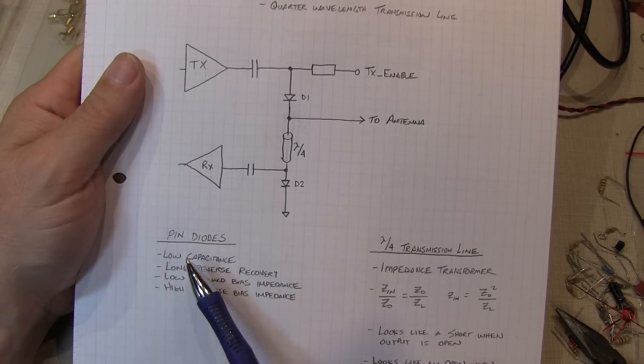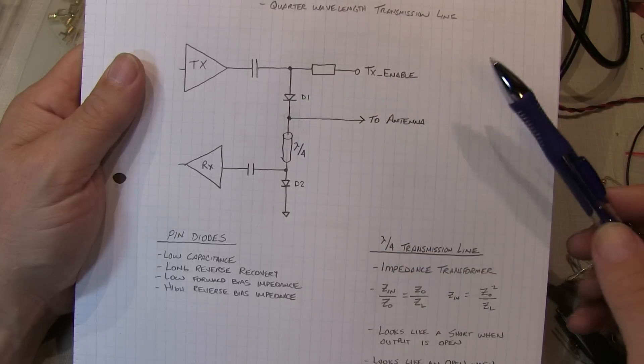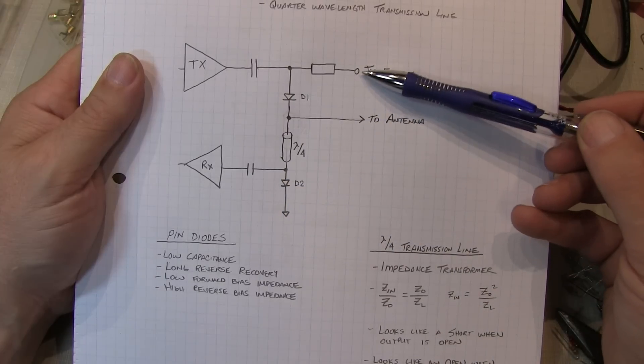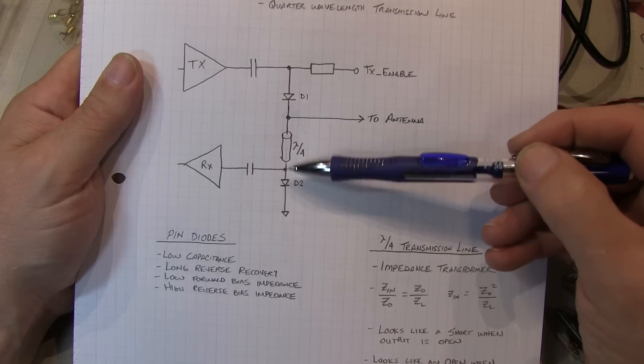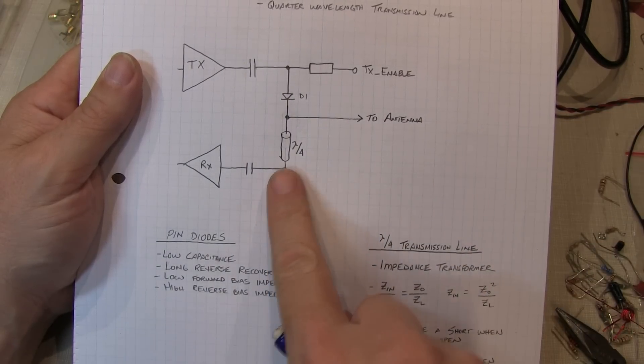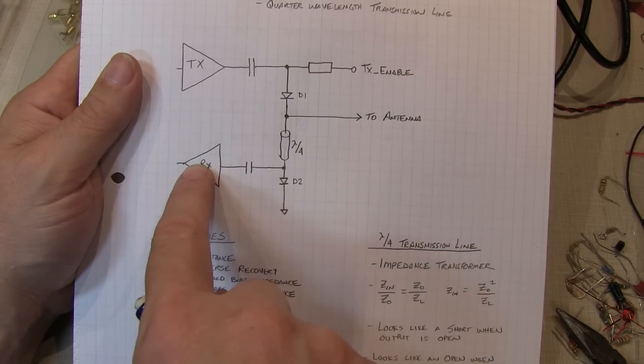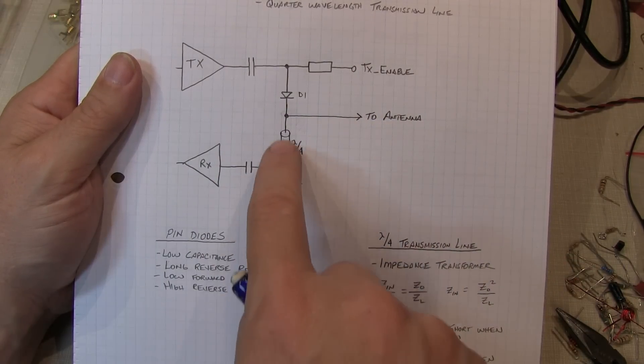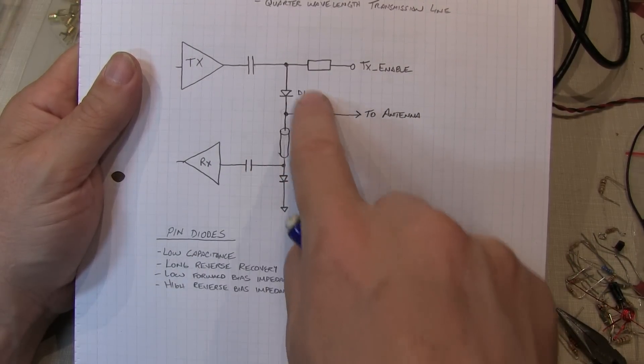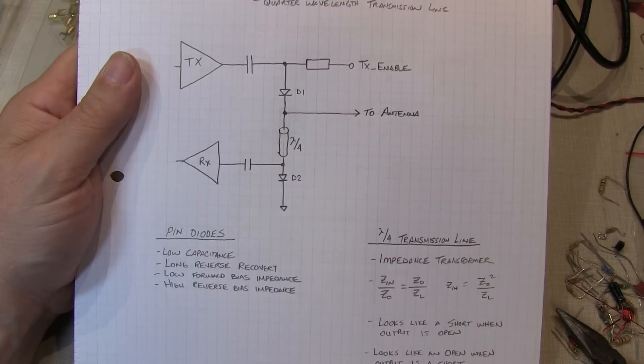So knowing these things about the pin diodes and the quarter wavelength transmission line, it's easy to see how this works. Let's consider the case where we're in the receive mode, so we don't have a bias applied here. Essentially, both pin diodes are off. And if they're not biased on, they look like a high impedance, you can effectively take them out of the circuit. And all we have is the antenna coming in through a quarter wavelength long transmission line going into the receiver. Now, of course, this just looks like an extension of the transmission line going to the antenna, so this just works normally. We don't see the output of the transmitter, and we don't see ground here. We just have that path for the receive path.